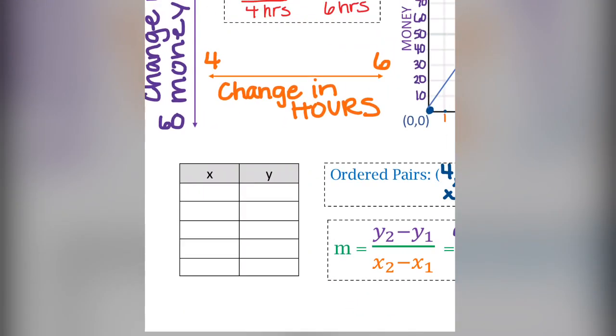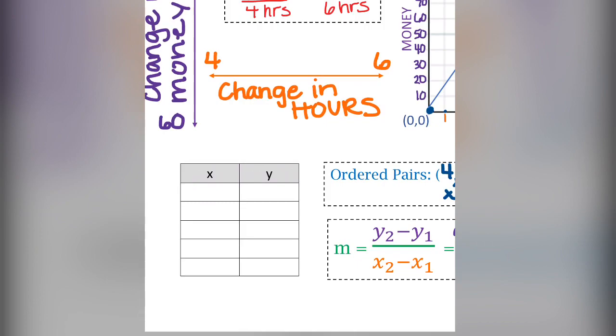With that data, we can fill out the table. We know 1 hour is $15. The problem itself said 4 hours would be $60, and that 6 hours was $90. Thinking about 1 hour for 15, we could do 2 and 30. And then of course, if she doesn't work at all, she's not going to make anything.